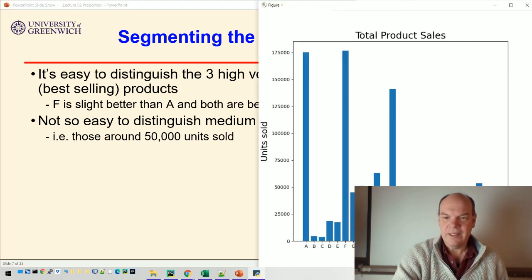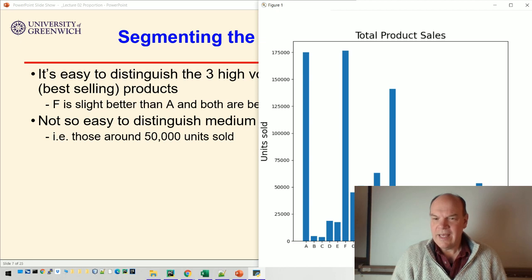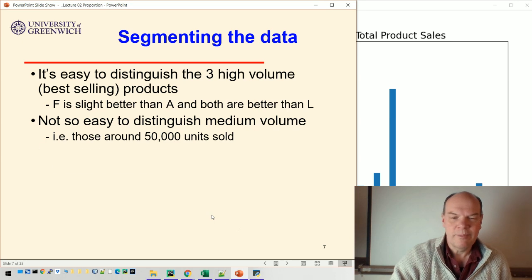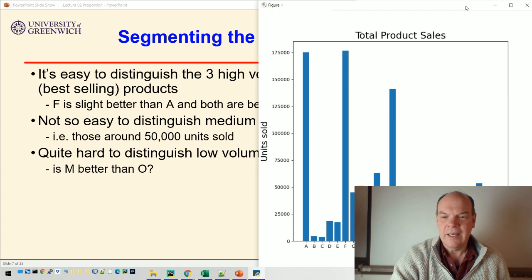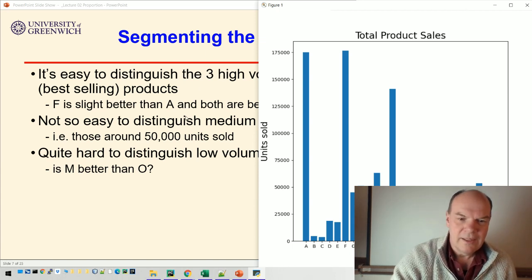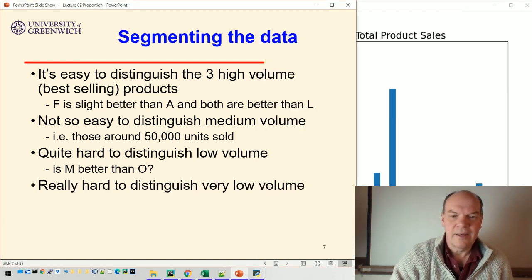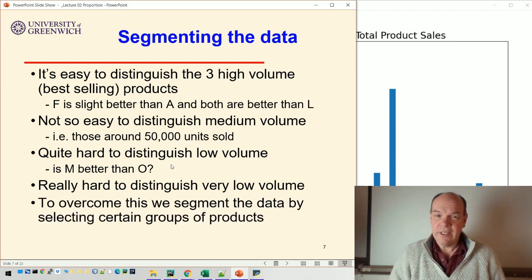It's not so easy though to distinguish the medium volume ones. So I can see that something like G, H, J, S and W are medium volumes. But can I tell if S is better than H or not? I'm not quite sure. You can't quite tell unless I perhaps put them back to back. And as we get further down, M and O, is one selling more than the other? I can't really tell from that chart. And then the really low volume ones are very small columns in this chart, really hard to distinguish.